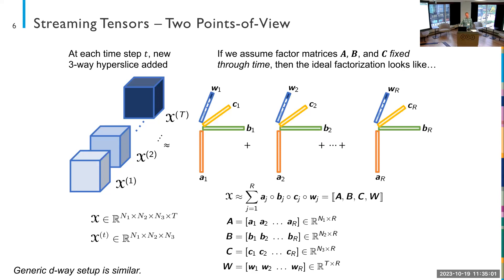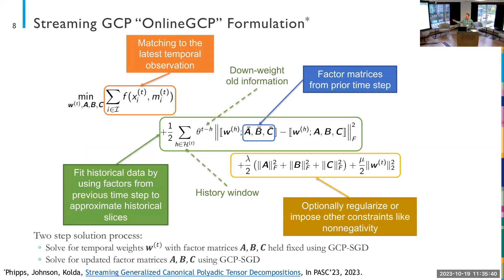This method assumes slow temporal change in the factor matrices — that's a pretty common assumption in streaming methods. Regarding regularization in the numerical experiments: we turned off the extra regularization term for these problems. It's included in the implementation but we didn't use it. If you see non-stationary behavior, you can change that through the history window and the theta parameter.